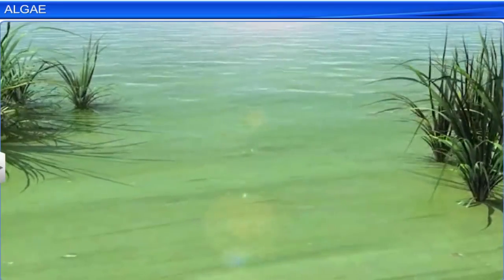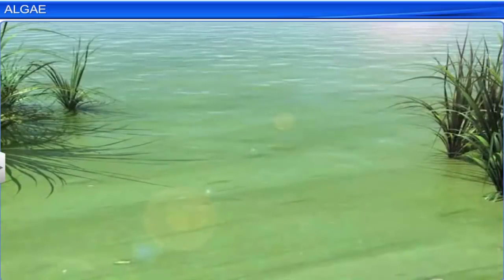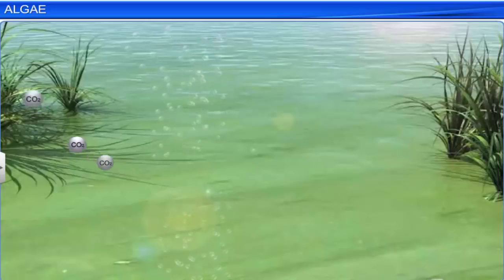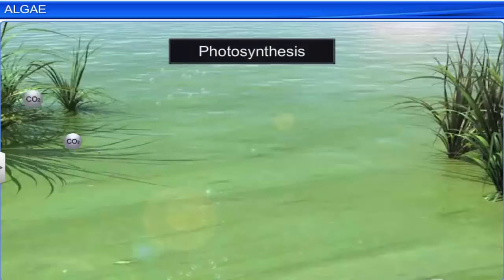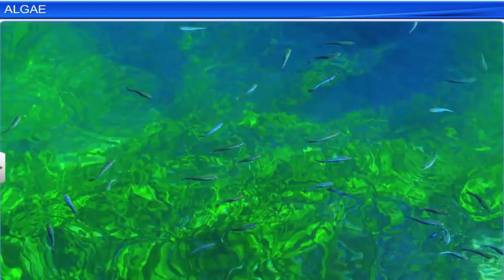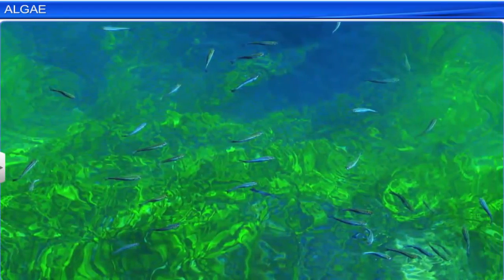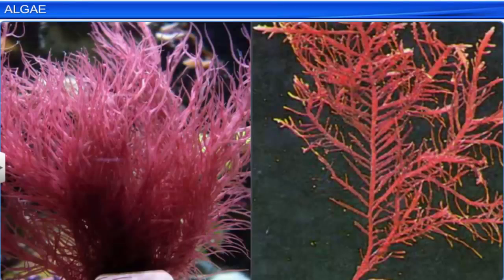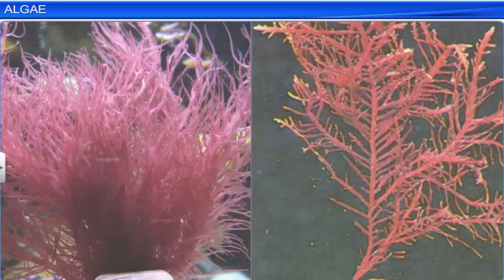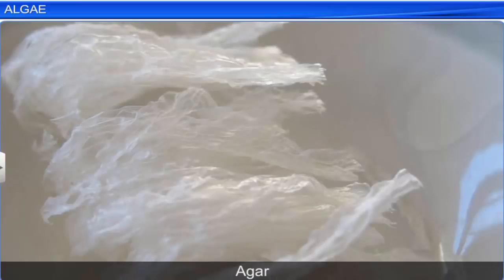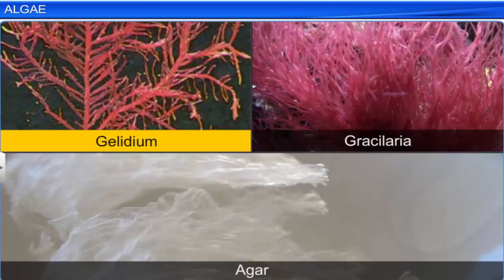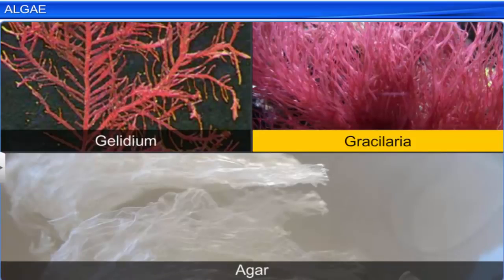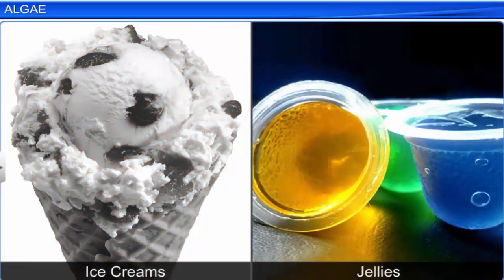Algae perform a wide variety of functions. They carry out carbon dioxide fixation and also increase the level of dissolved oxygen in their immediate surroundings through photosynthesis. They produce energy-rich compounds that form food for aquatic organisms. Algae are also used for commercial purposes. For instance, agar, obtained from Gelidium and Gracilaria, is used to prepare ice creams and jellies.